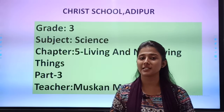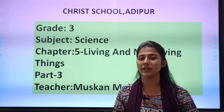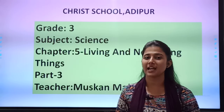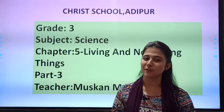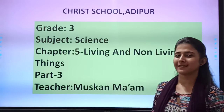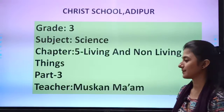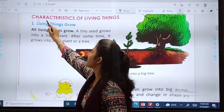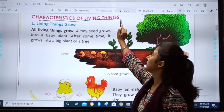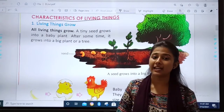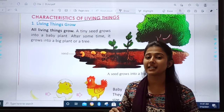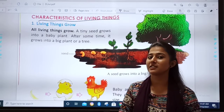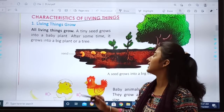I hope you have understood the concept of living and non-living. Now we will understand it in detail. Take out your text books. Today we will start with the characteristics of living things. That day I told you the head points that there are 6 characteristics. So today we will start with the first one.